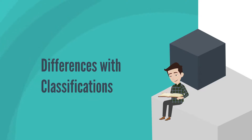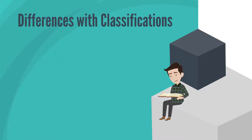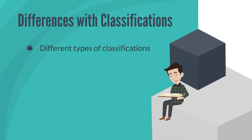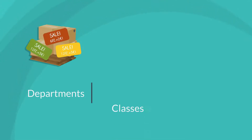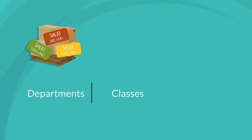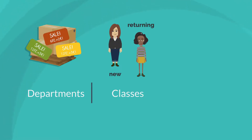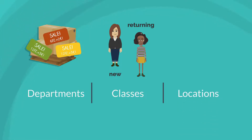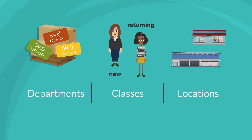While departments, classes, and locations do share many similarities, they also have key differences. Perhaps the most obvious difference is in what each category includes. Departments includes broader categories of a company, such as the sales department. Classes includes basically any way that you want to break down information outside of departments or locations. One example is that you may want to track sales orders by new customers and returning customers, so you would create a new customer class and a returning customer class. And locations includes all the physical locations, including both stores and warehouses of your company.